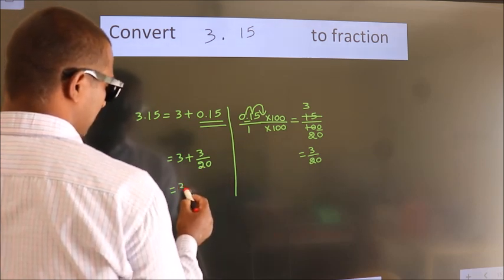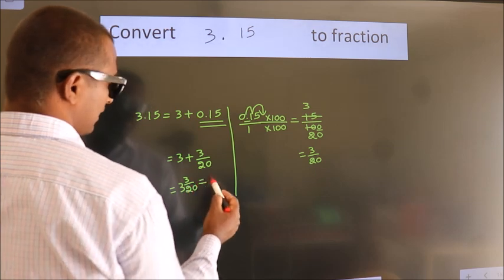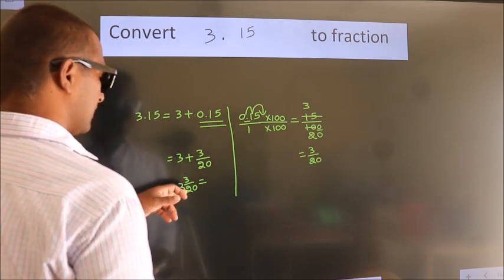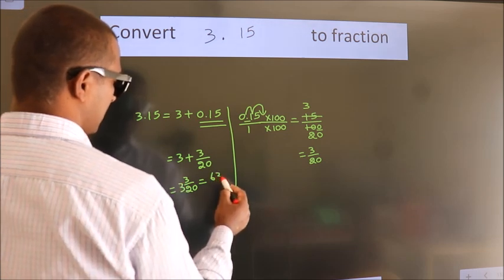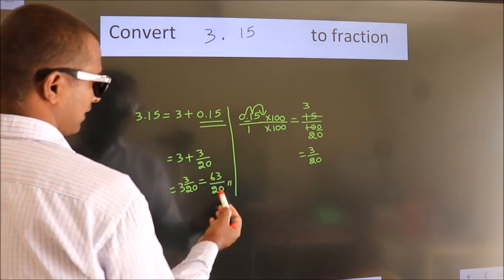In mixed fraction form, it is 3 and 3/20. And in improper fraction form, it is 3 times 20 plus 3, which is 60 plus 3, equals 63/20.